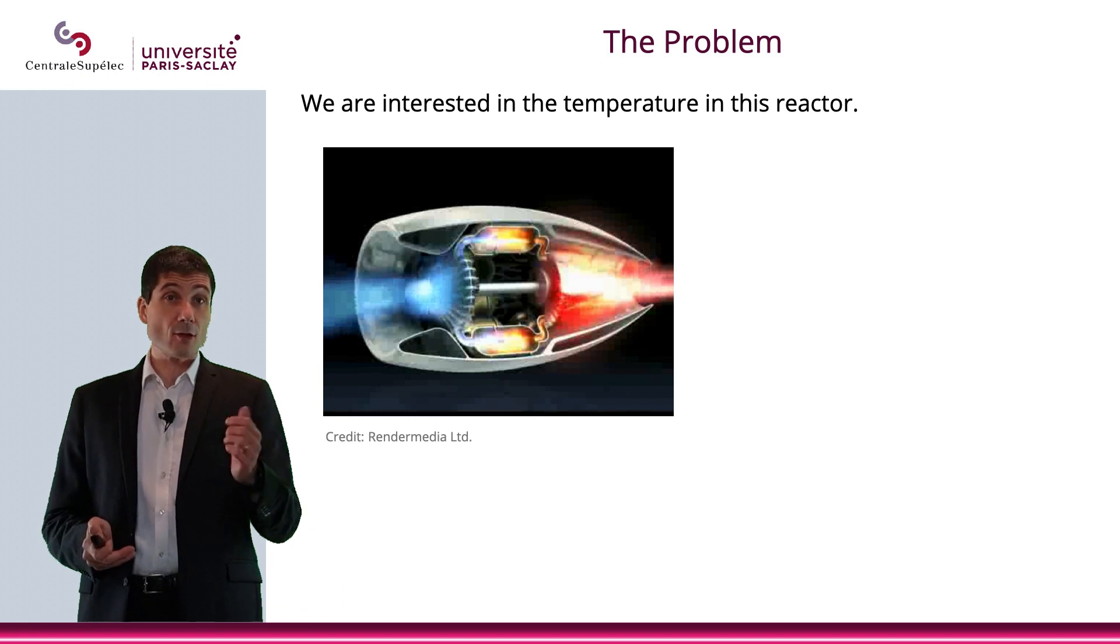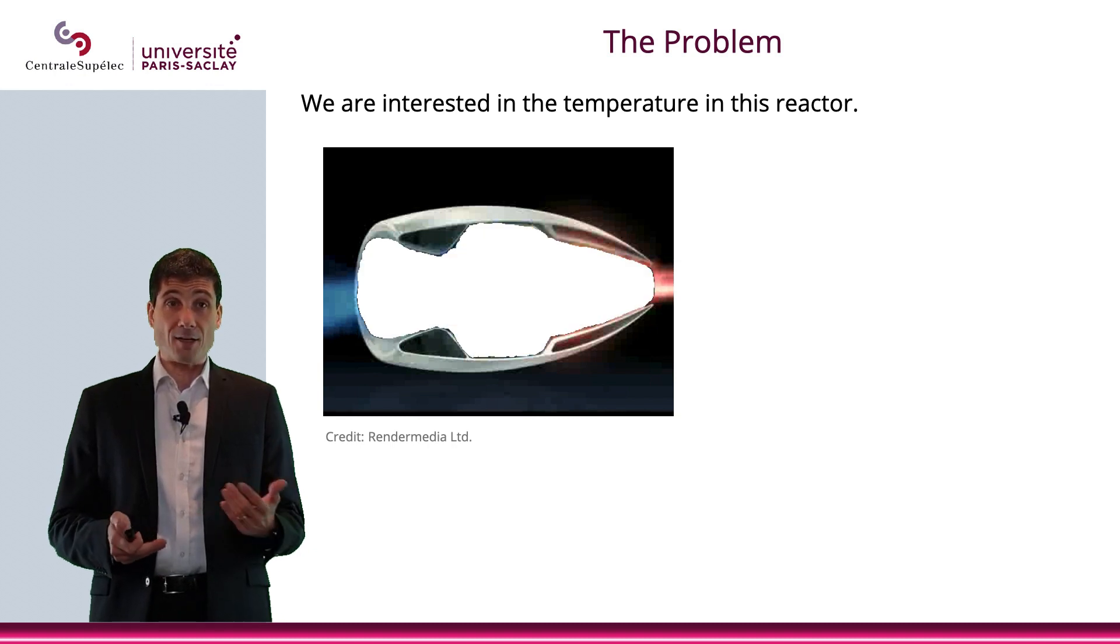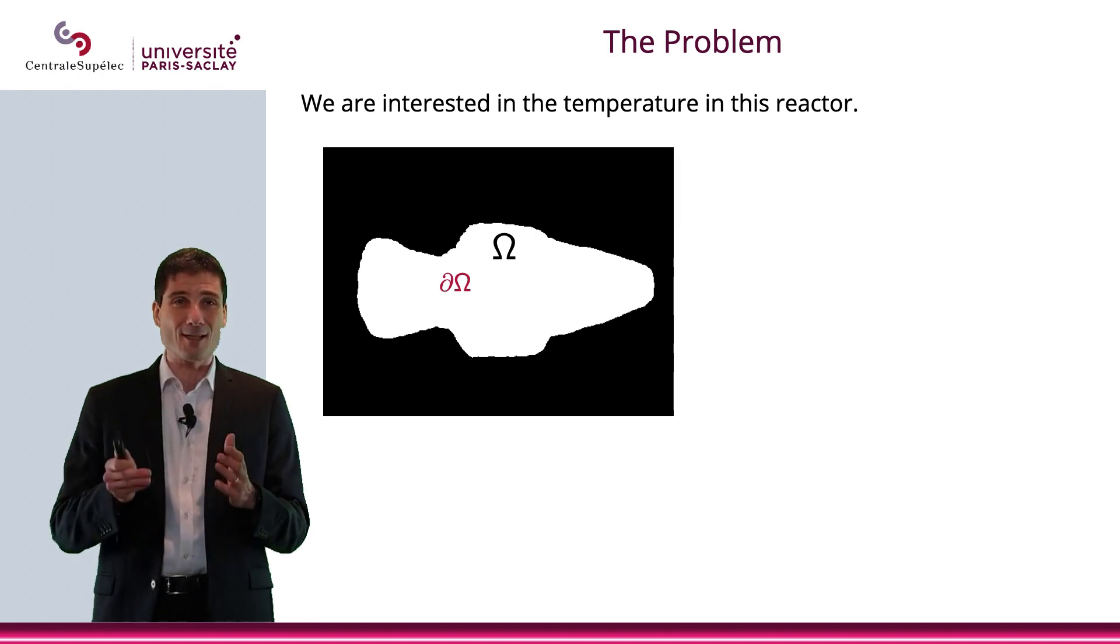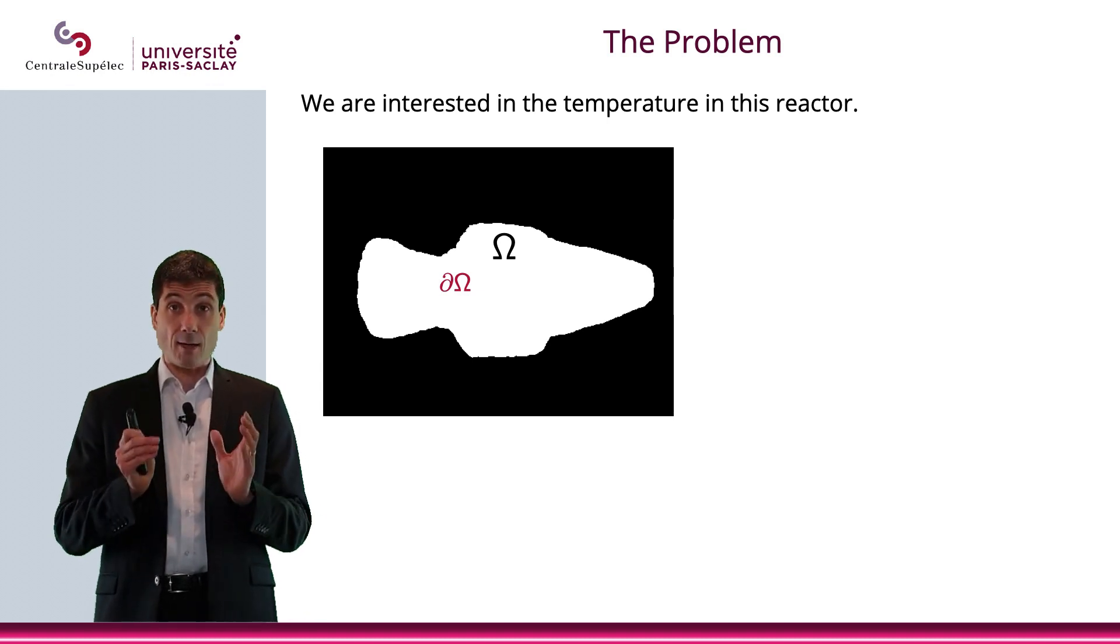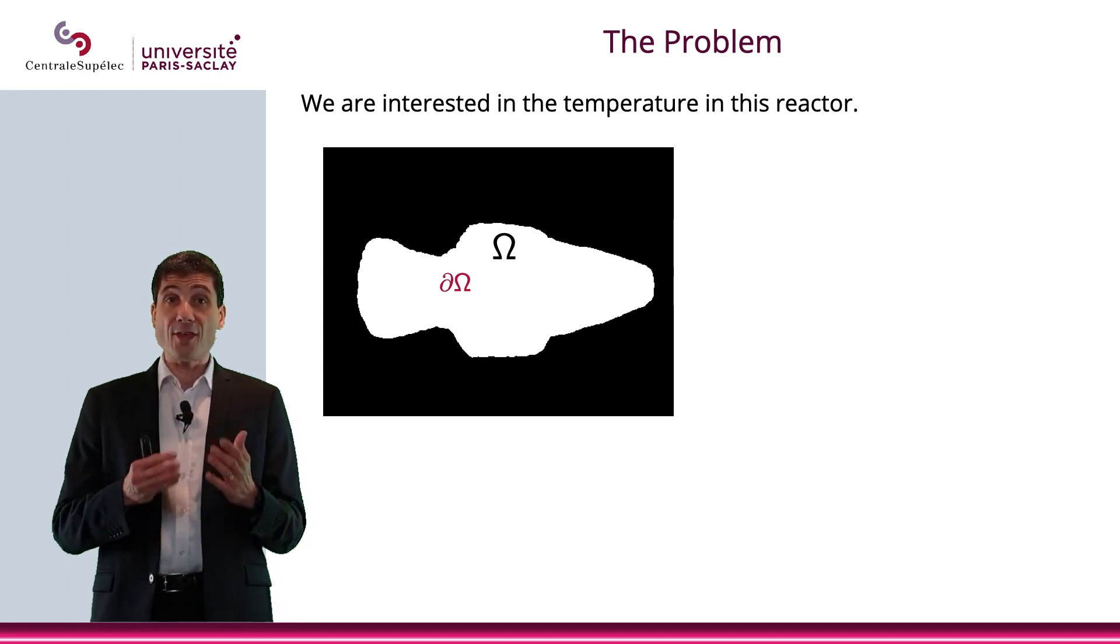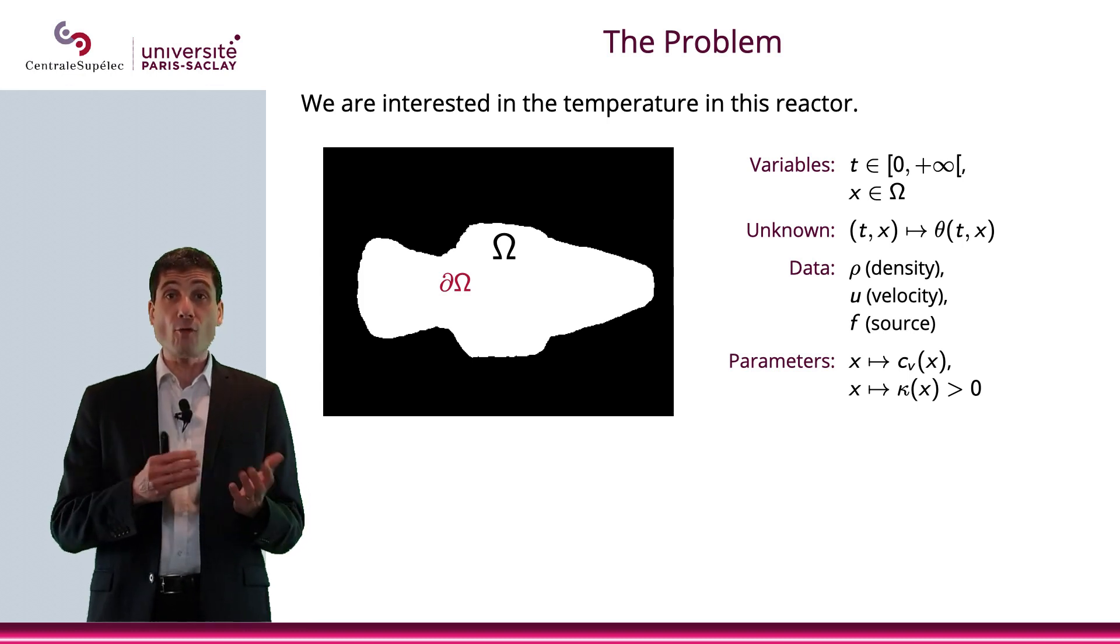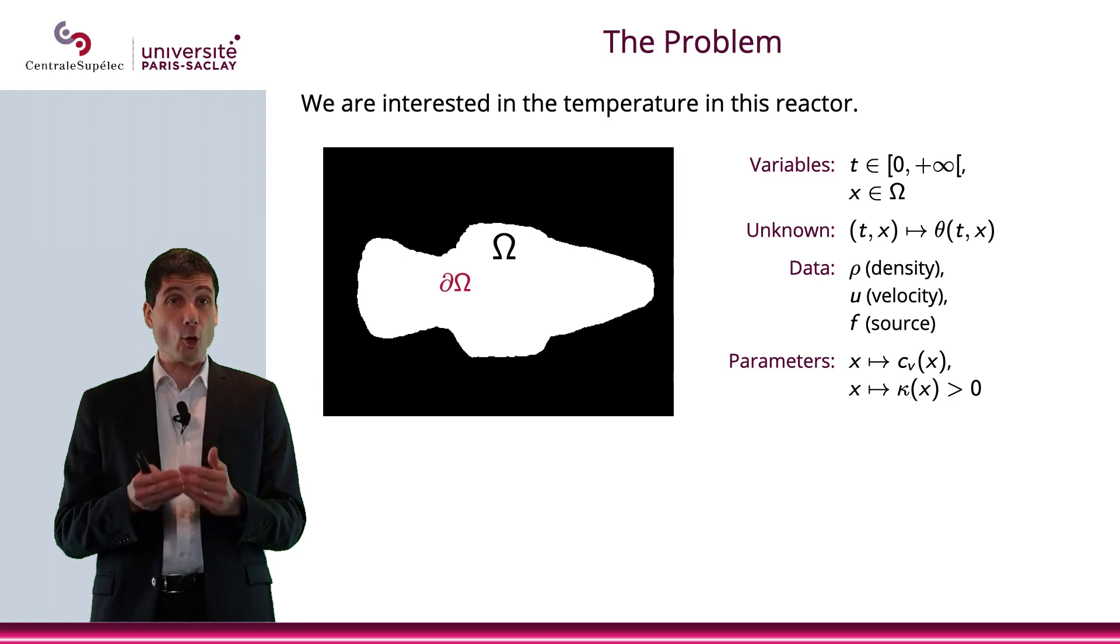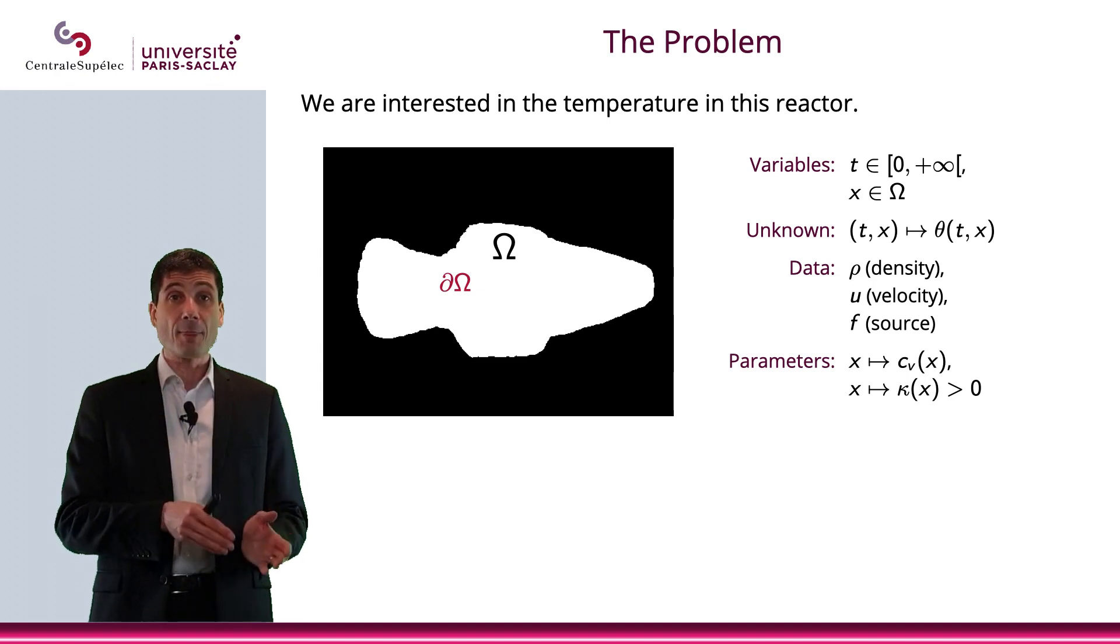Let me consider this reactor, and mathematically speaking it will be a domain Ω with a boundary ∂Ω, which I will assume to be perfectly regular with no problem in terms of regularity for this domain. What I'm looking for here is the temperature inside of this reactor at each point and each time. So the unknown will be θ(t,x). The two variables of interest are t, the time, and x, the location in the reactor.